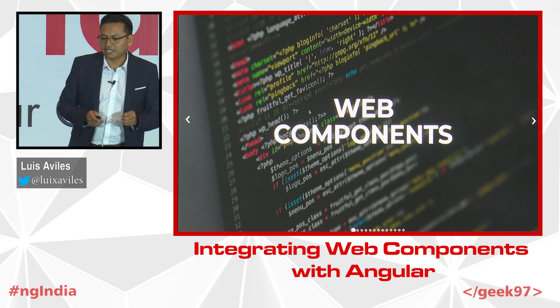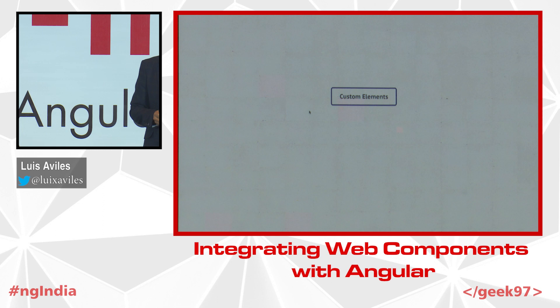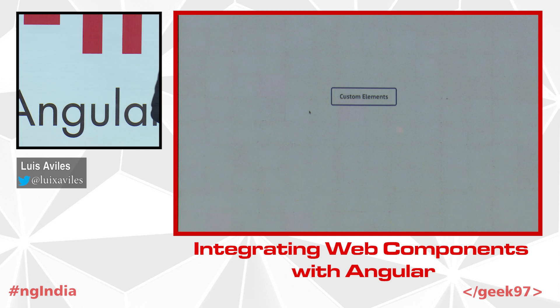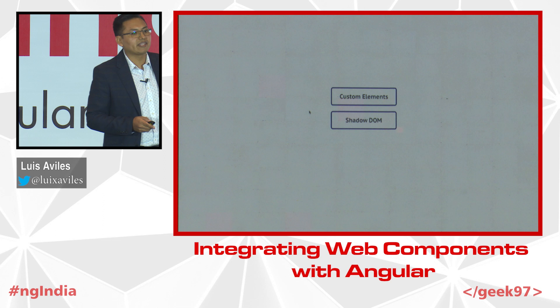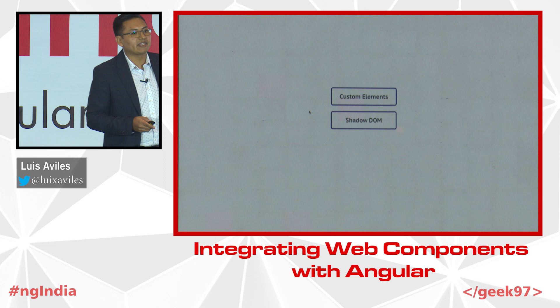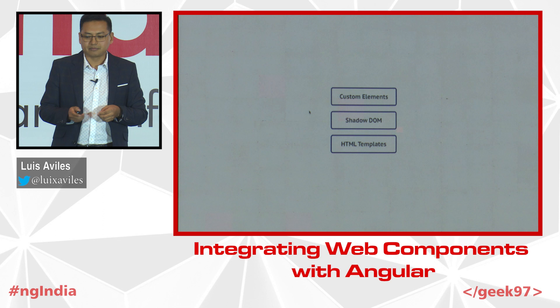One possible solution for this is the use of web components. But what are web components? Web components is a set of different technologies. We can mention the JavaScript APIs that allow us to create custom elements and use them as native elements in our applications. We also get a way to encapsulate these custom elements and isolate them from the rest of the DOM, which is helpful to avoid possible style collisions. And finally, we have HTML templates.